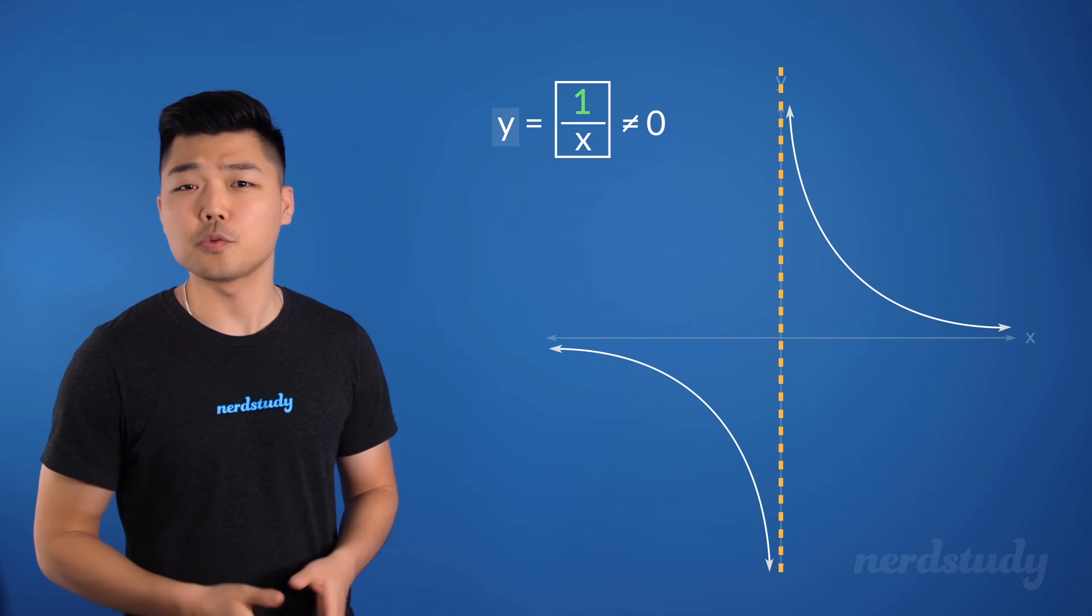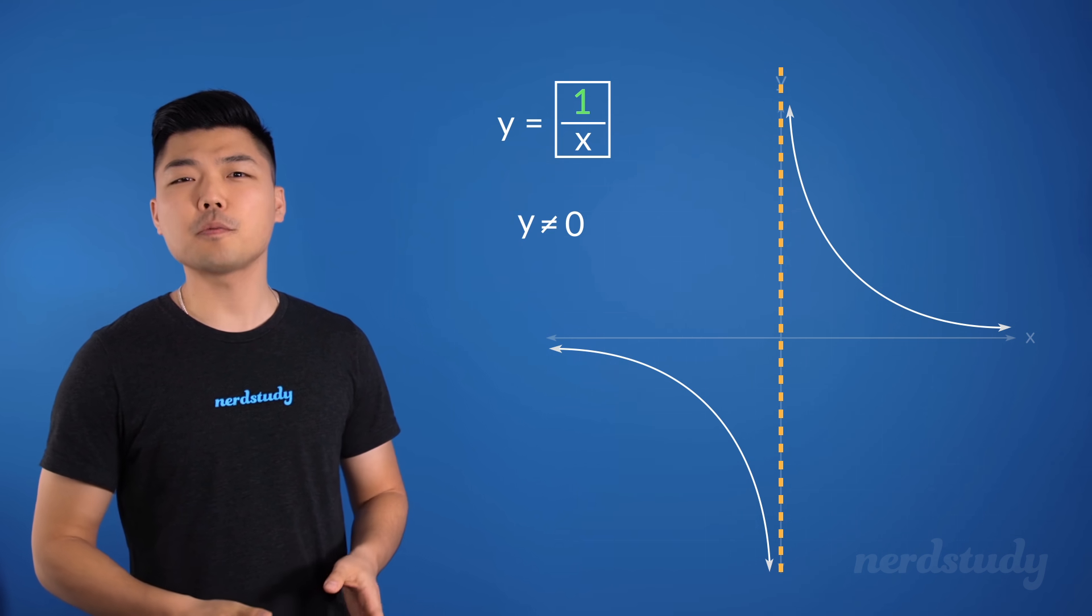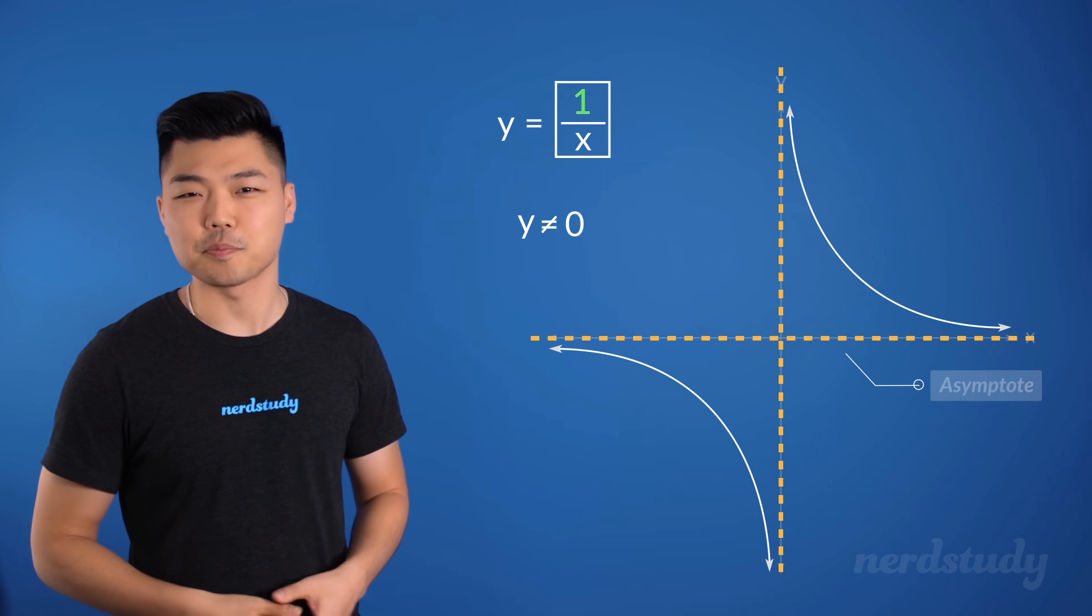Therefore, since y can also never equal 0, this would make the x-axis yet another asymptote.